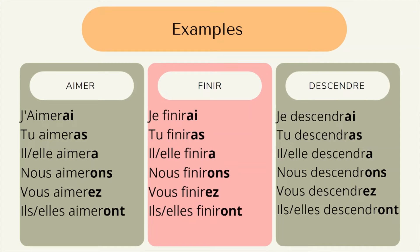Here we have the conjugation of three verbs: aimer (to like), finir (to finish), and descendre. For 'aimer,' an ER-ending verb, the entire verb remains the same through ER, and we add the new endings: aimerai, aimeras, aimera, aimerons, aimerez, aimeront. For 'finir,' we do the same — adding ai, as, a, ons, ez, ont to the stem 'finir.' The same applies to 'descendre' as well.